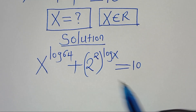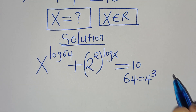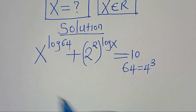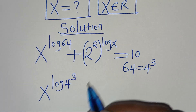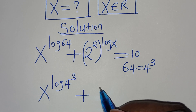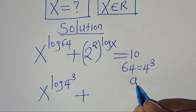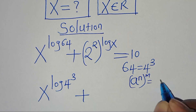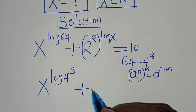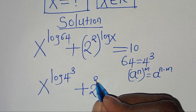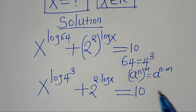Now we can express 64 as the same thing as 4 to the power of 3. Let's substitute this so that we have x to the power of log 4 to the power of 3, then plus, now 2 to the power of 2 multiplied by log x. This is in the form of a to the power of n raised to the power of m, which we can express as a to the power of n multiplied by m. So here we have 2 to the power of 2 multiplied by log x, this is equal to 10.